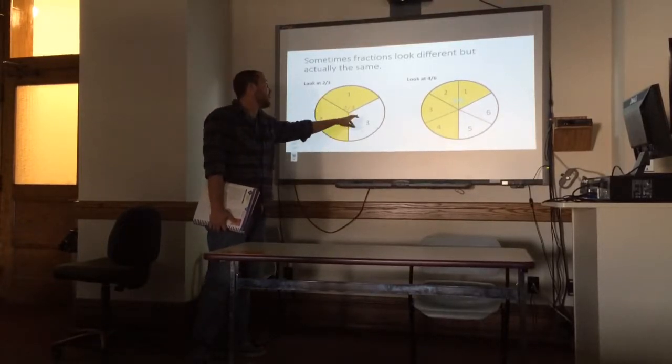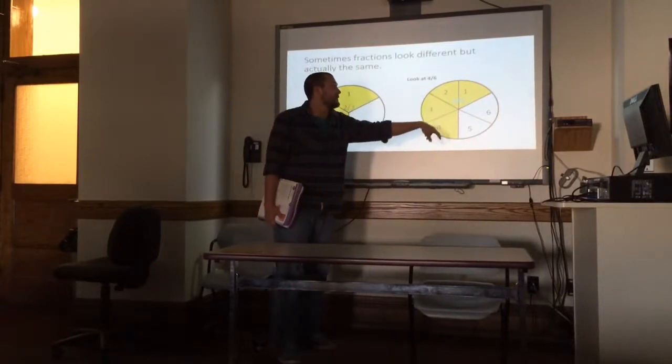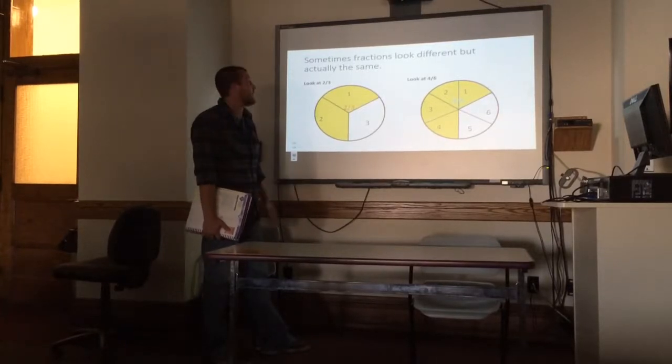As you can see, one, two out of three, one, two, three, four out of six. Different looking fractions, but on the unit circle they look the exact same because they are the exact same.